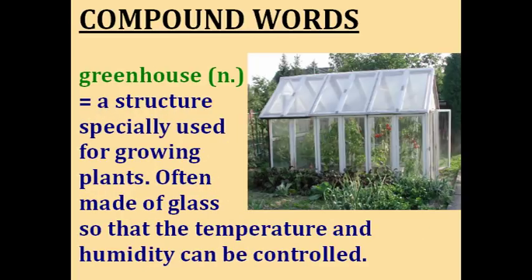A greenhouse is a structure especially used for growing plants. You'll see these used in gardens — this greenhouse in the picture may have some tomatoes inside. It's used for growing flowers and vegetables, and a greenhouse is usually made of glass so that the temperature and humidity inside can be controlled.